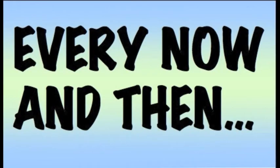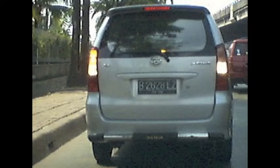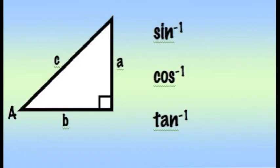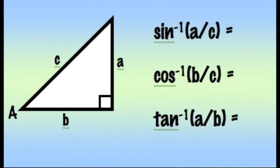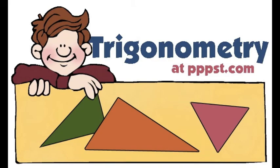Every now and then I'm not given the degrees. But you know what? Instead they give me sides — two or three. I just go in reverse — use the trig inverse. Side over side equals the measure of the angle. It's trigonometry, it's geometry.